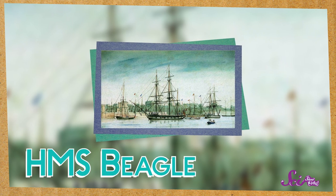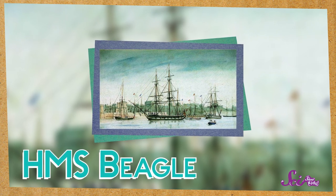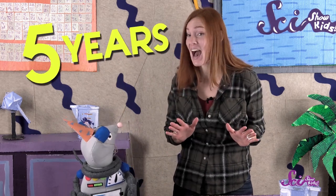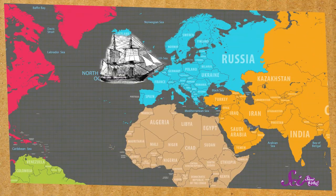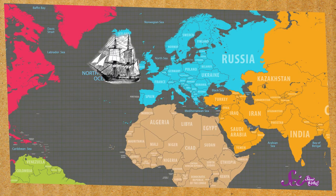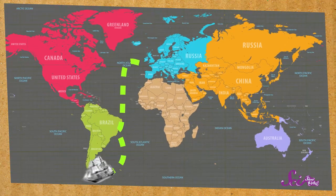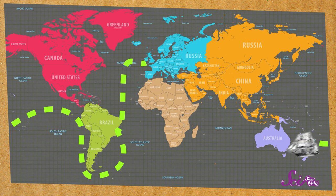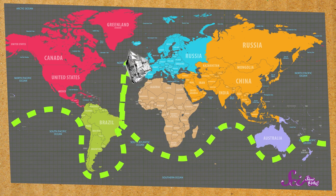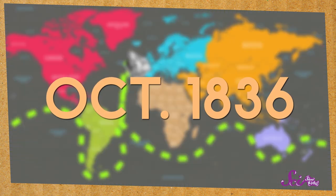He set off with a ship called the HMS Beagle, and this was no ordinary boat trip. Darwin and his shipmates sailed all over the world for five years! The Beagle left England in December of 1831. It sailed all the way around the tip of South America to some islands in the Pacific Ocean, past the continent of Australia, around the southernmost point of Africa, and arrived back to England in October of 1836. During this trip, Darwin's job was to study nature at every place where the ship stopped. So Darwin took lots of notes on the rocks, trees, and animals he found all over the world.